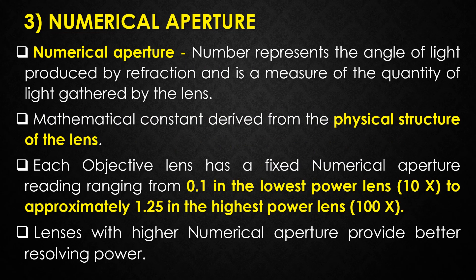The third parameter is numerical aperture. The numerical aperture is a number which represents the angle of light produced by refraction, and it is a measure of the quantity of light gathered by the lenses. It is a mathematical constant derived from the physical structure of the lens. Each objective lens has a fixed numerical aperture ranging from 0.1 in the lowest power (10x lens) to approximately 1.25 in the highest power oil immersion lens (100x lens). Lenses with higher numerical aperture provide better resolving power because they increase the angle of refraction and widen the cone of light entering the lenses.